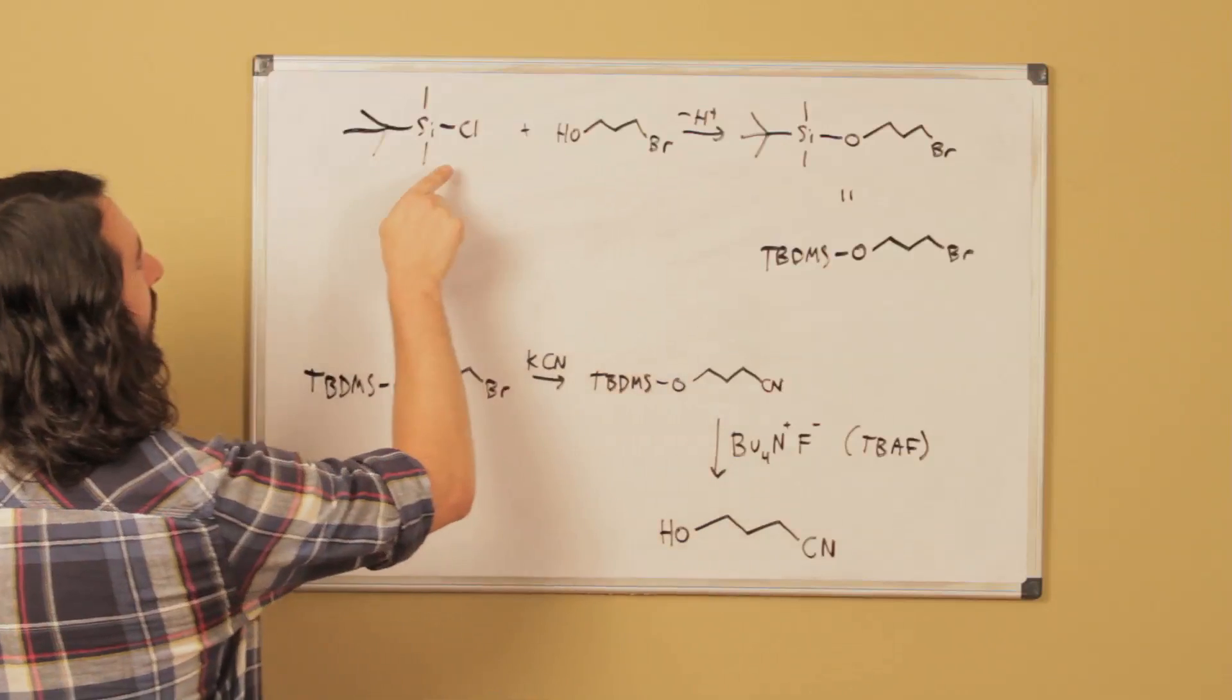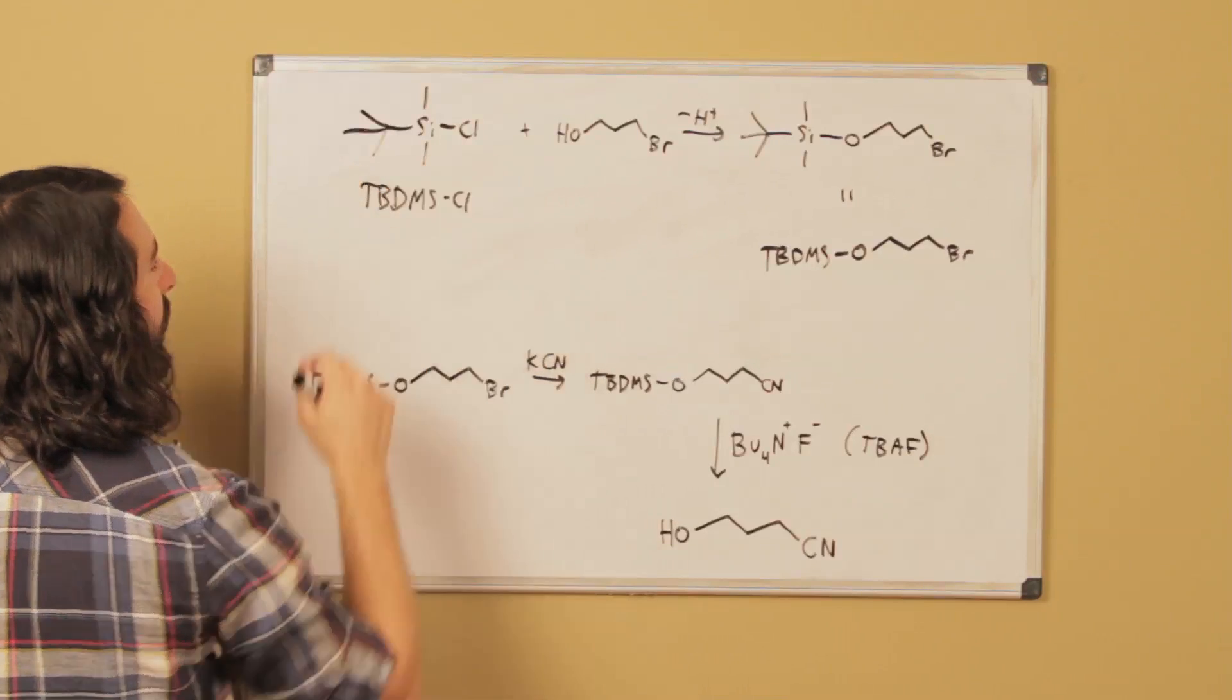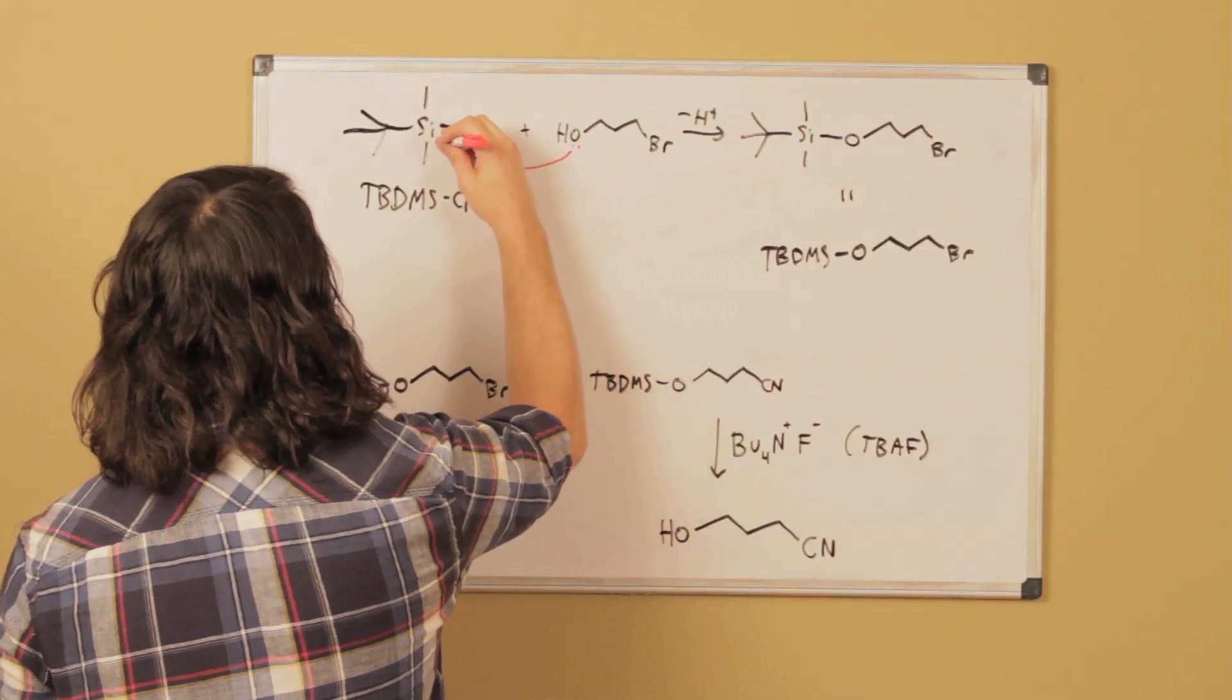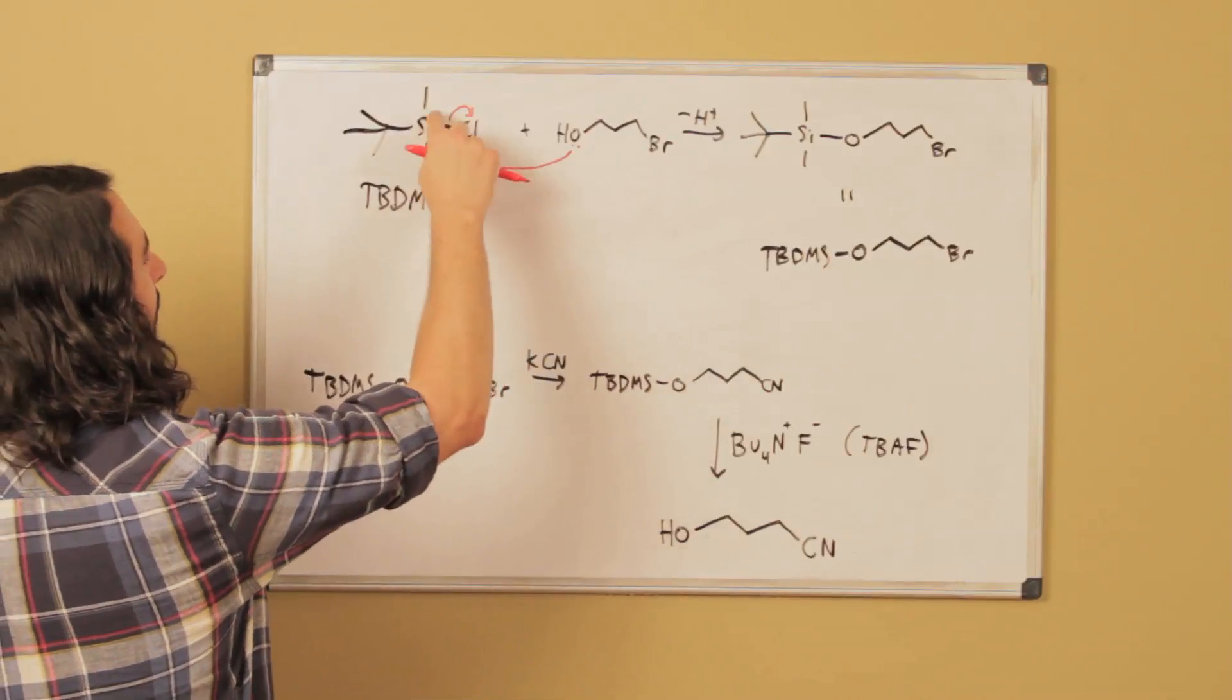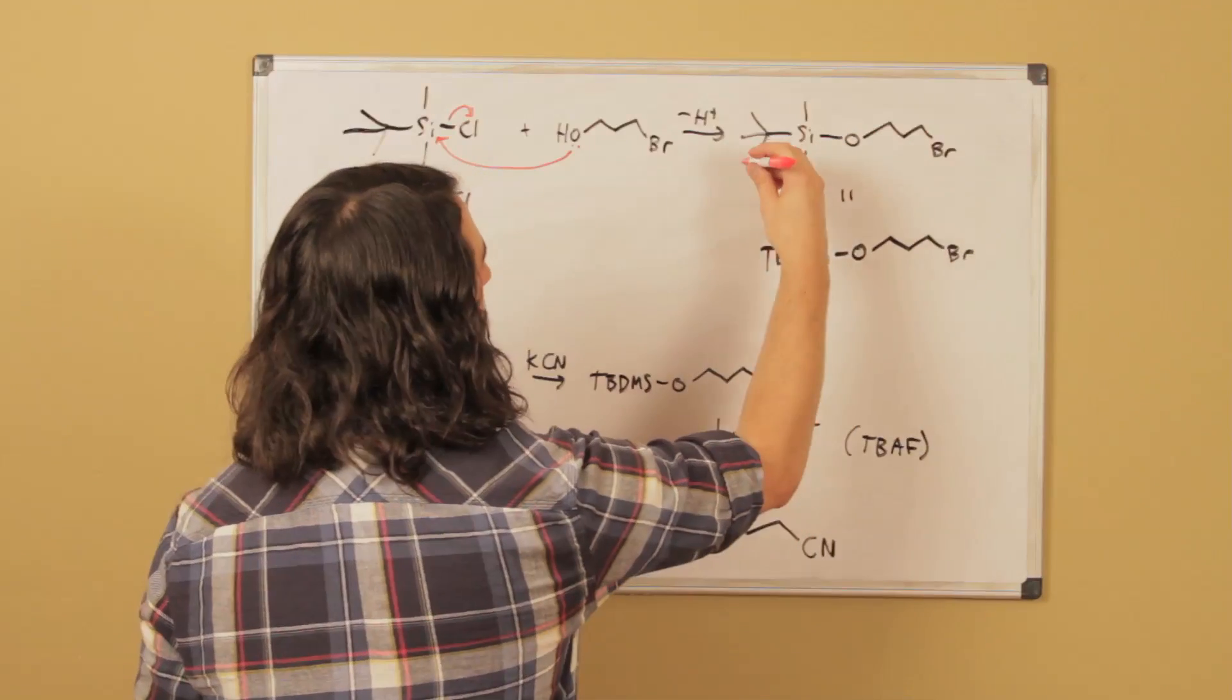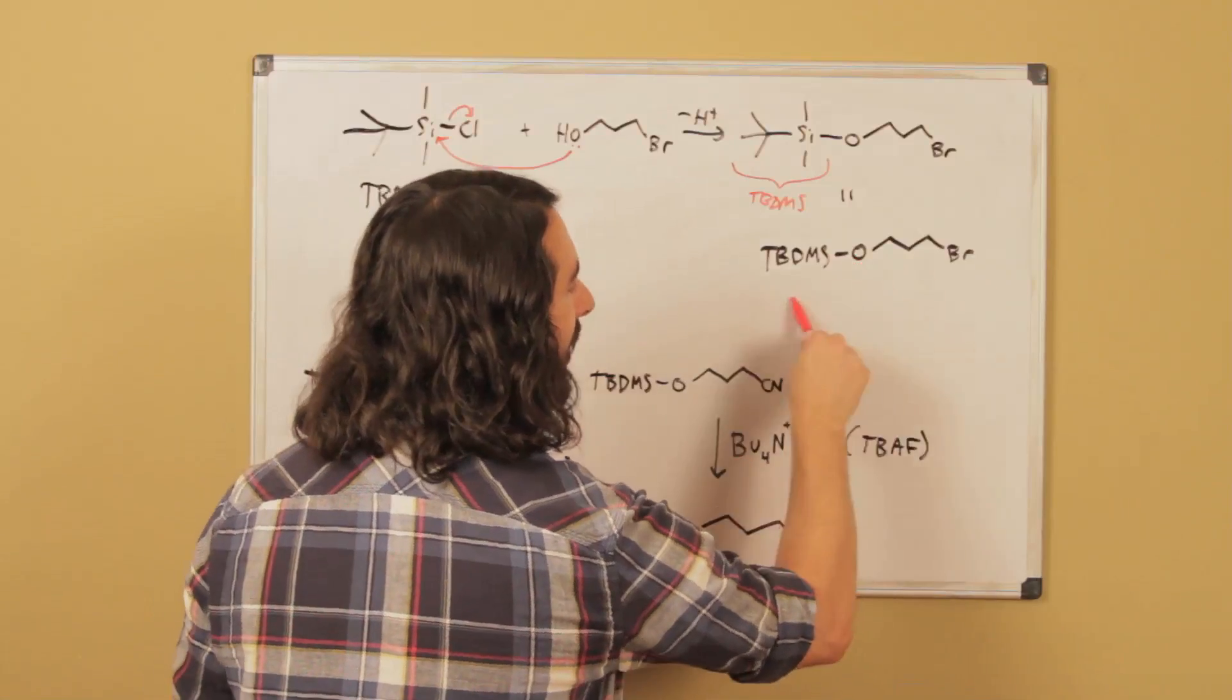Let's say we have our substrate and here is TBDMSCl. We've got our tert-butyl dimethyl silyl group and the chloro group. The oxygen atom is more labile than chlorine, so this will be able to displace the chlorine. The oxygen is more electronegative, so it can attack the silicon atom and displace the chlorine. Now we have this whole TBDMS group on that substrate.